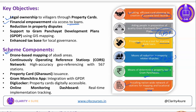The components of the scheme include: drone-based mapping, Continuous Operating Reference Stations for geotagging and maintaining land records, property card issuance, the Gram Mitra app integrated with Gram Panchayat Development Plans, DigiLocker access for property cards, and an online monitoring dashboard to track things in real time.